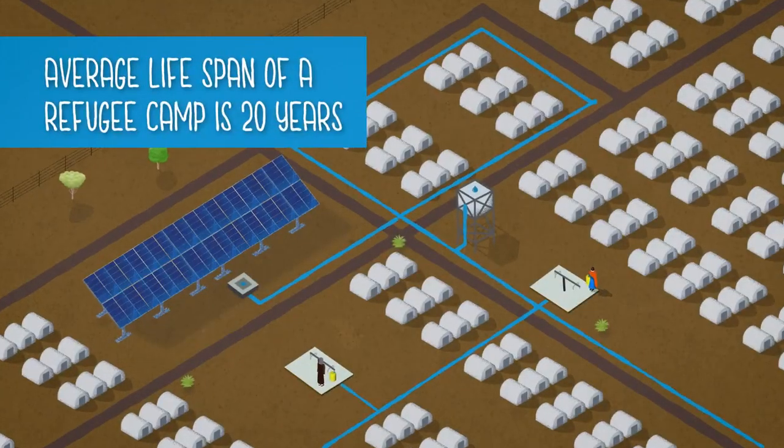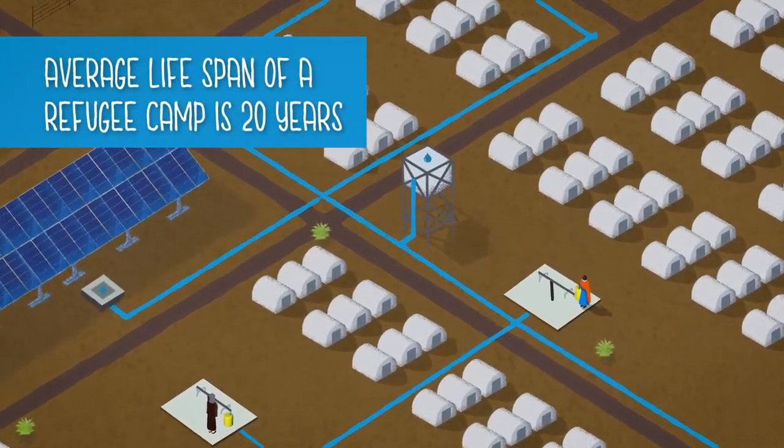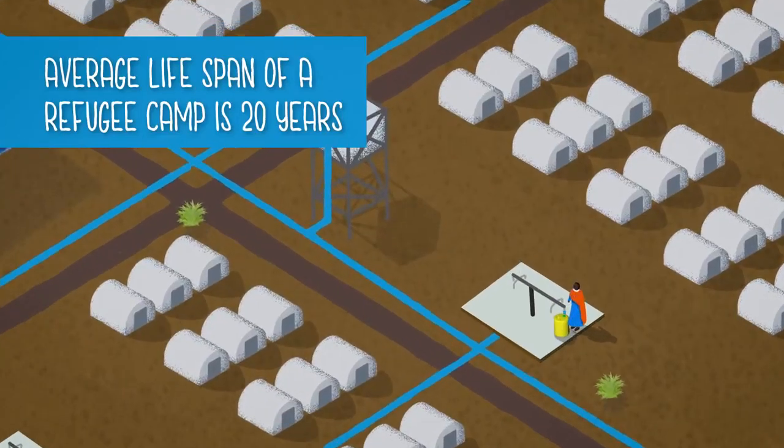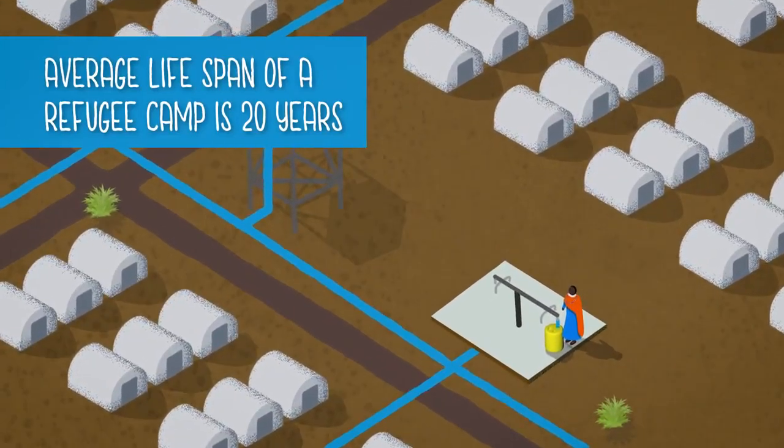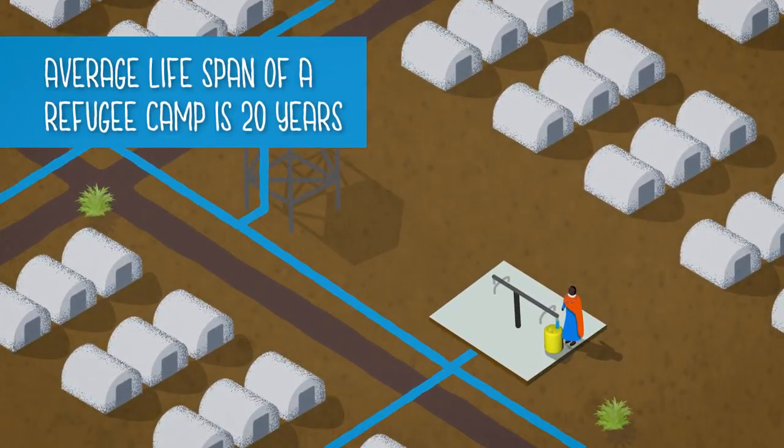The average lifespan of a refugee camp is about 20 years. This presents a huge challenge to provide services for people that are quick to set up but also robust and long-lasting.